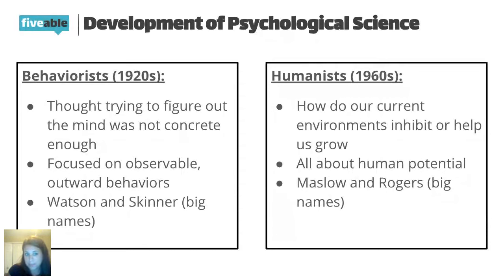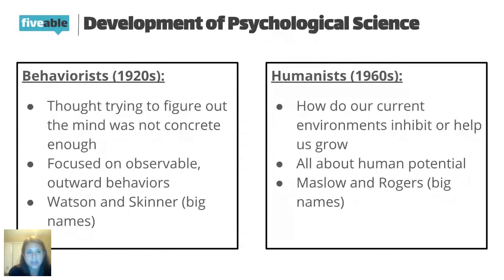After the behaviorists and their observable approach, in the 1960s we see the humanist approach. Humanists felt that behaviorists treated humans almost like robots, interacting with their environment without emotion or feeling. The humanists focus on how our current environment inhibits or helps us grow — it's a very nurture-oriented approach all about human potential and growth. Maybe you've heard of Maslow's hierarchy of needs: the very tippy top of the pyramid is self-actualization, being the best person you can be.